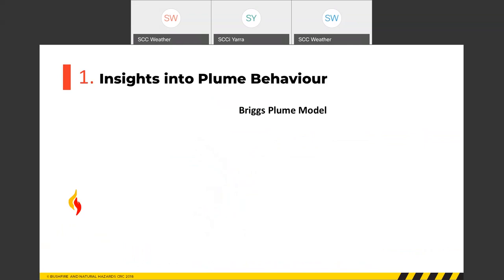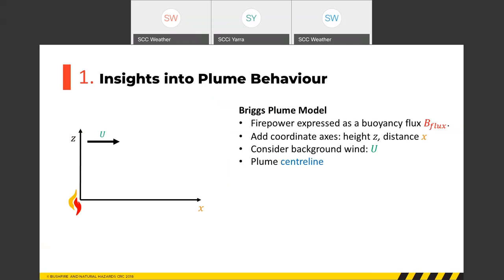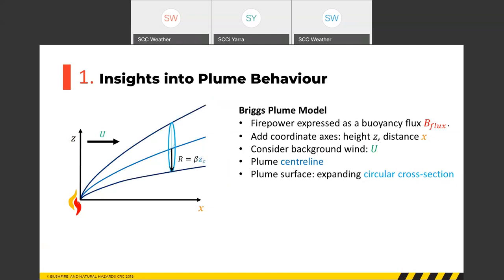In the Briggs model, the fire power or heat flux entering the plume is expressed as a buoyancy flux — that red term. Adding coordinate axes with height z, downstream distance x, and background wind u, the equations describe the plume centreline. The Briggs model assumes the plume surface is an expanding circular cross-section, with the radius directly proportional to the free convection height zc, where beta is a constant.